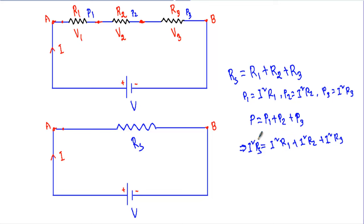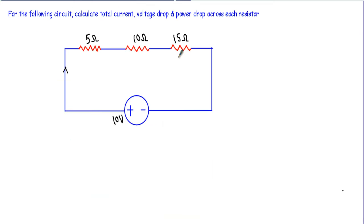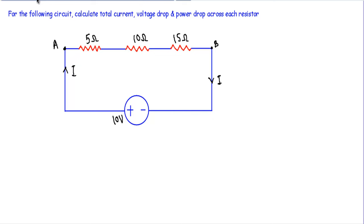Now let me show you an example. For the following circuit, calculate the total current, voltage drop, and power drop across each resistor. We have 5 ohm, 10 ohm, and 15 ohm resistors connected in series across a 10 volt source. Calling the terminals A and B, since this is a closed path, current will flow from the positive terminal toward the negative terminal, and in a series circuit the current remains the same throughout the path.